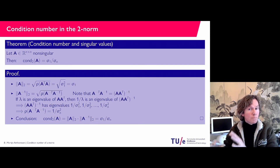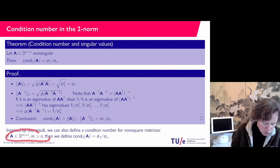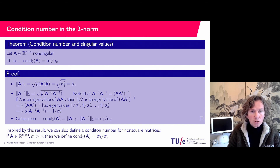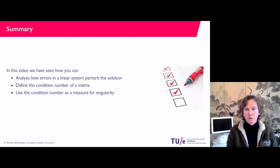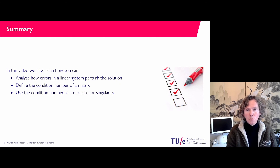This is also a way to compute the condition number. Additionally, if you have a non-square matrix A of size m by n with m greater than n, you can still define the condition number this way, and we will be using that for least-squares problems in future videos. To summarize: we have seen what happens when you perturb your linear system, how errors in the matrix or right-hand side influence the solution. This leads to the condition number, which is a good measure for singularity — unlike the determinant. That concludes this video.